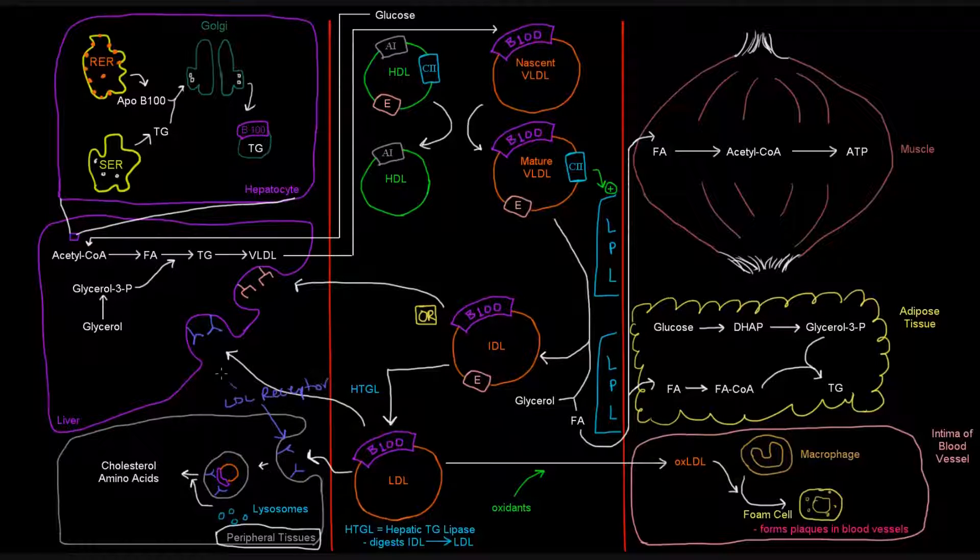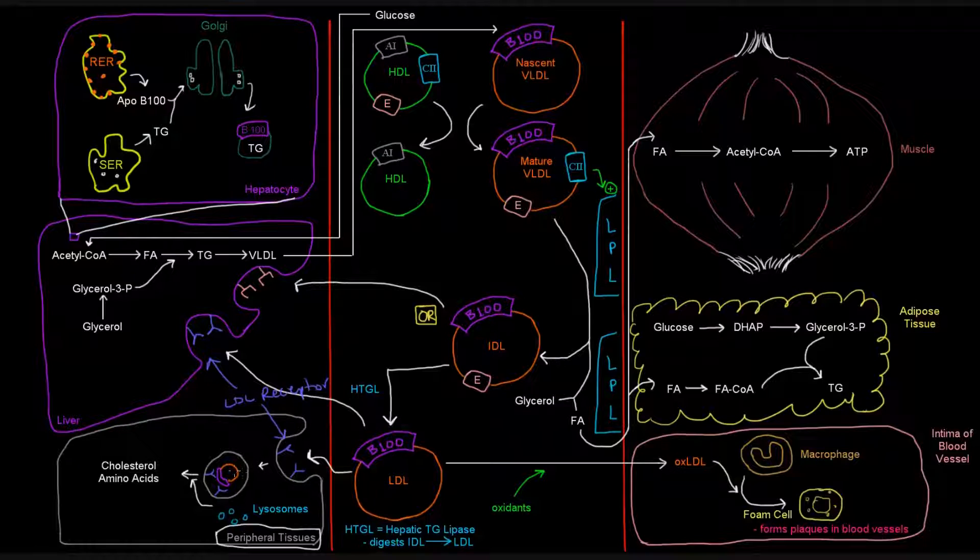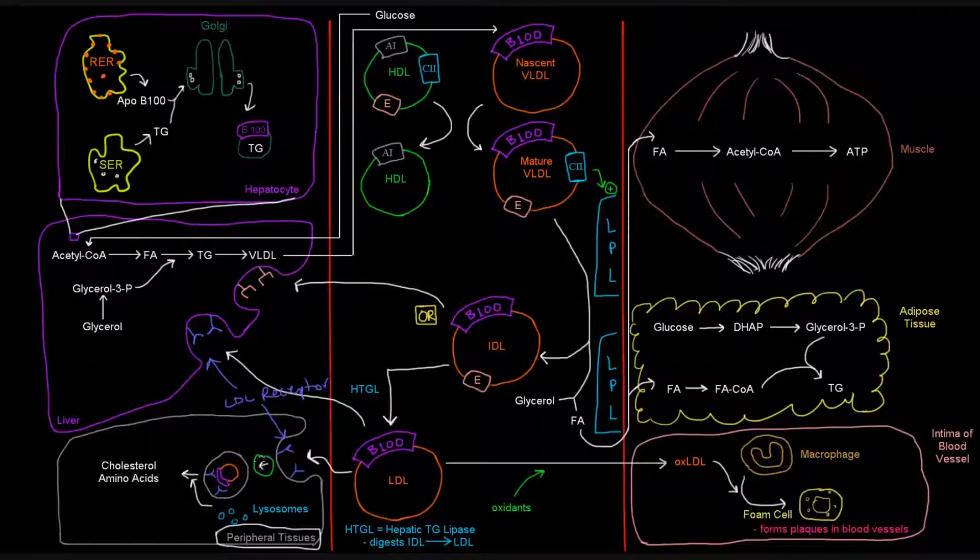And it's actually there, too. We'll bind the B100 and be taken up into the cell via endocytosis. So, that's what that arrow represents, that little tiny one there. That's endocytosis into these peripheral tissue cells.